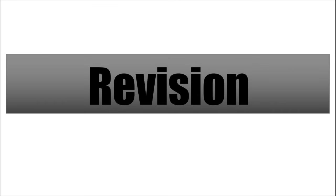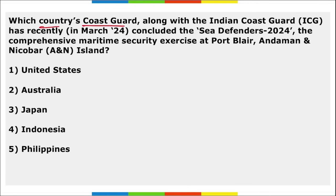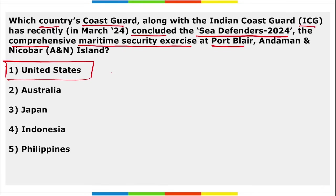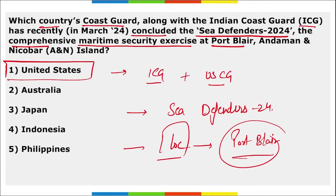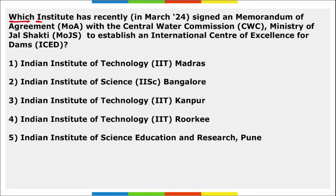Now let's move to the revision part. Which country's coast guard along with the Indian Coast Guard recently concluded the Sea Defenders 2024 maritime security exercise at Port Blair, Andaman and Nicobar Islands? It is the United States of America. The Indian Coast Guard and United States Coast Guard together conducted Exercise Sea Defenders 24. The location where this exercise was held is Port Blair — important, as location-based questions are definitely asked in your exam.